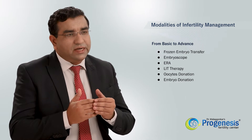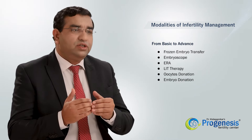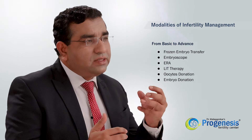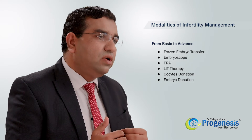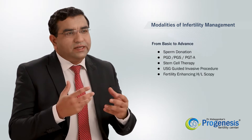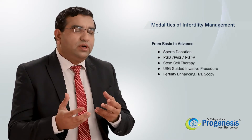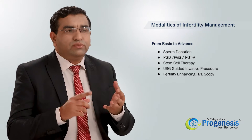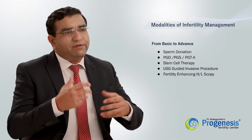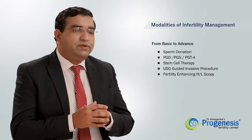If there is a problem with the oocytes, or in cases of menopause, premature ovarian failure, or primary ovarian failure, we can proceed with oocyte donation. In cases of testicular azoospermia along with oocyte issues, we can also go ahead with embryo donation. The next modality is the donation program, which includes oocyte donation, embryo donation, and sperm donation.